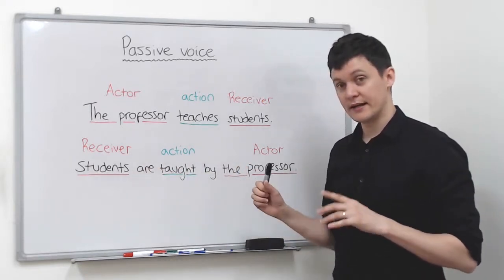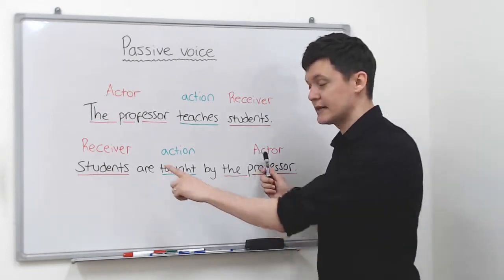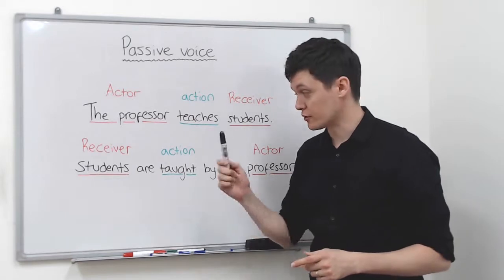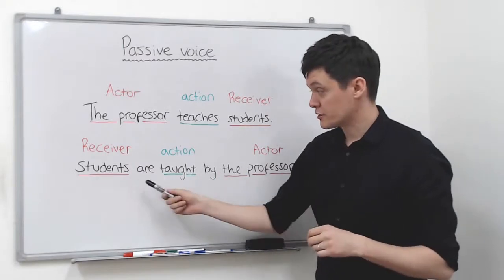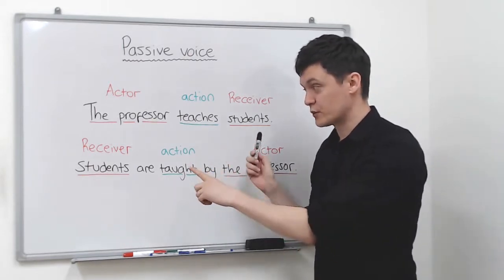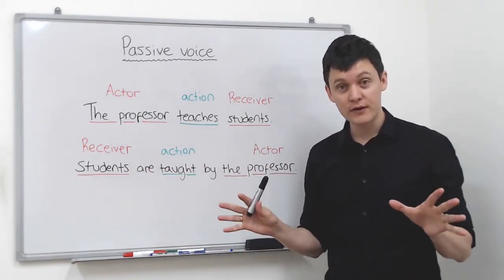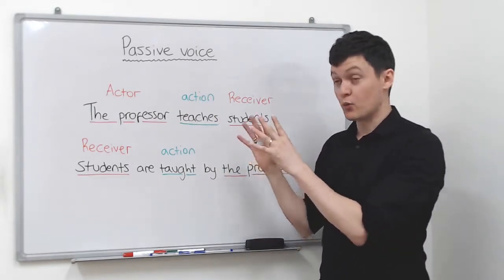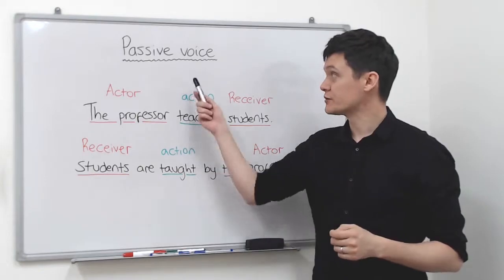Now let's look at the passive voice. We still have the actor and receiver — the information hasn't changed. All we've done is swap the actor and receiver, and now we've put the receiver in the subject position. So: students are taught by the professor. Same information — the students receive this action, the professor does this action — the only difference is we've swapped the receiver and actor. Now the receiver is in the subject position, and this is our first example of the passive voice.